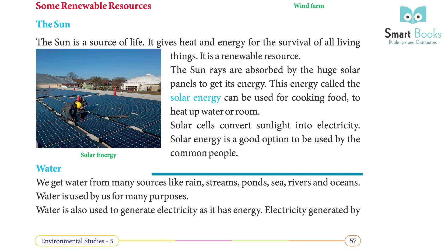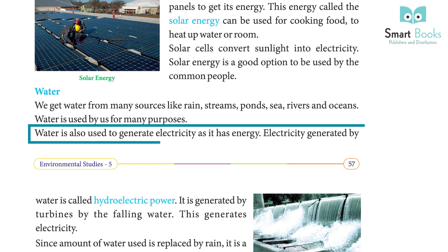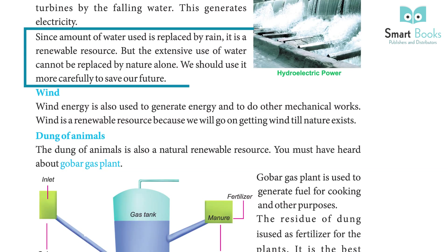We get water from many sources like rain, streams, ponds, sea, rivers, and oceans. Water is used by us for many purposes. Water is also used to generate electricity as it has energy. Electricity generated by water is called hydroelectric power, generated by turbines using falling water. Since the amount of water used is replaced by rain, it is a renewable resource. But extensive use of water cannot be replaced by nature alone, so we should use it more carefully to save our future.